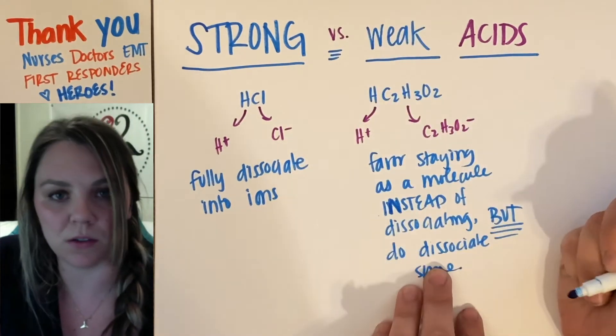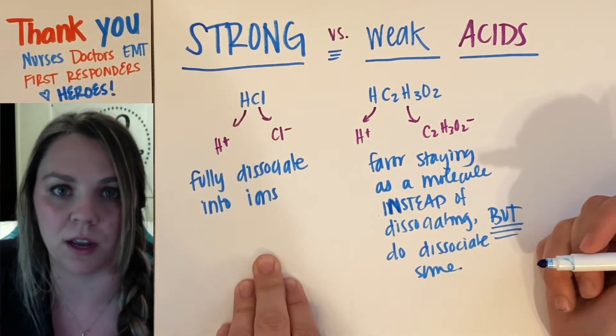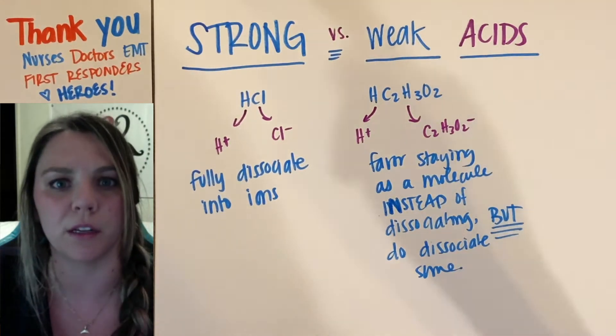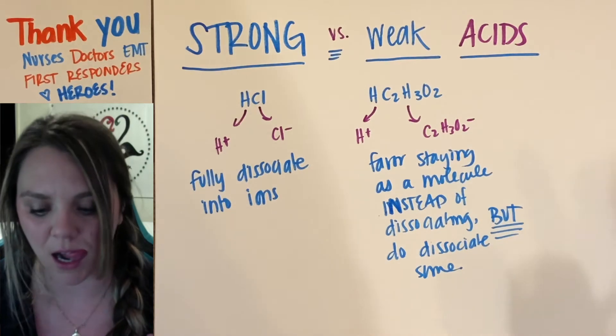So there's some dissociation with weak acids. There's a ton of dissociation for strong acids. Dissociation just means it's dissolving, right? It's breaking apart into their cations and anions.